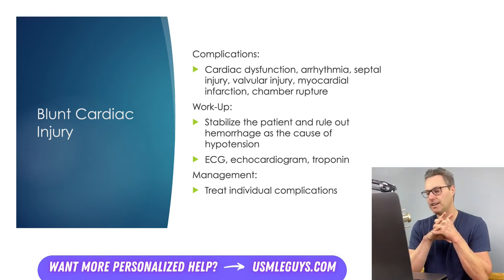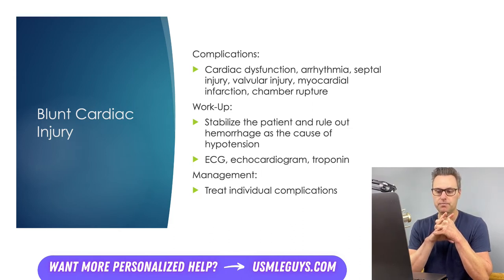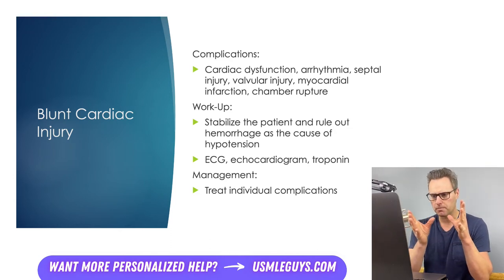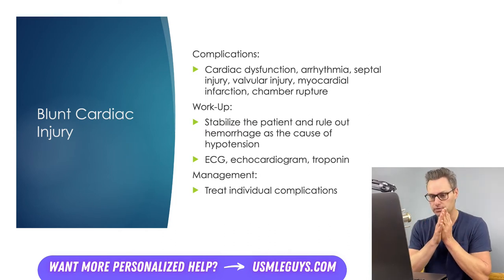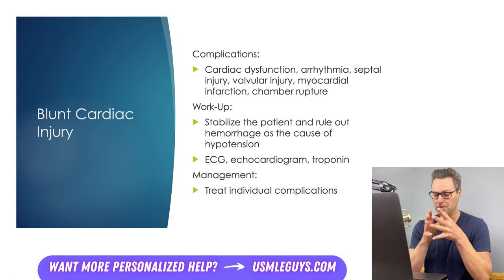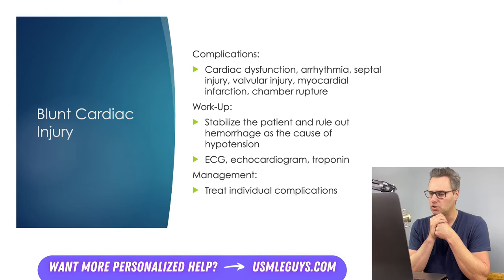The same can be said of tachycardia in a case of blunt cardiac injury. Prior to suspecting an arrhythmia, you first want to assume that hemorrhage is causing the tachycardia. After evaluating for hemorrhage, arrhythmias can be further investigated with cardiac monitoring. Arrhythmias associated with blunt cardiac injury are extremely variable — you might see things from AFib to premature ventricular contractions to ventricular fibrillation. Less than 5% of patients who experience blunt cardiac trauma will develop an arrhythmia, and usually the arrhythmia, if one does develop, is non-life-threatening. Septal and valvular injuries are also quite rare.